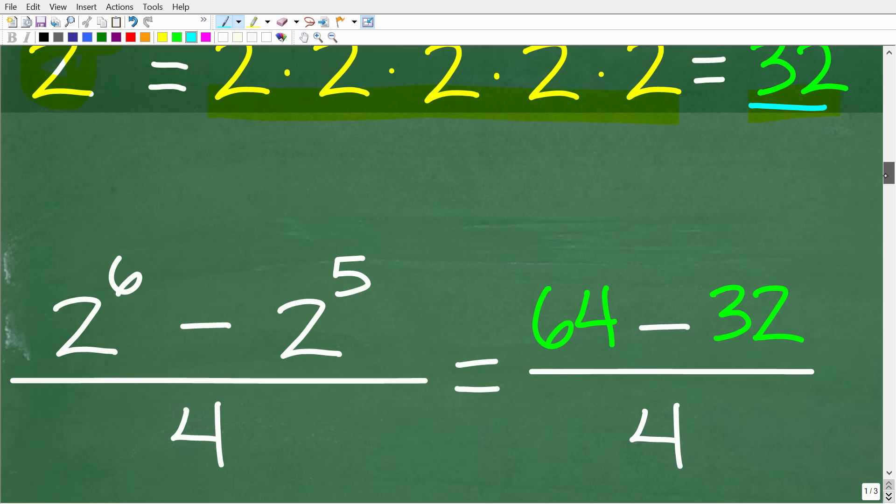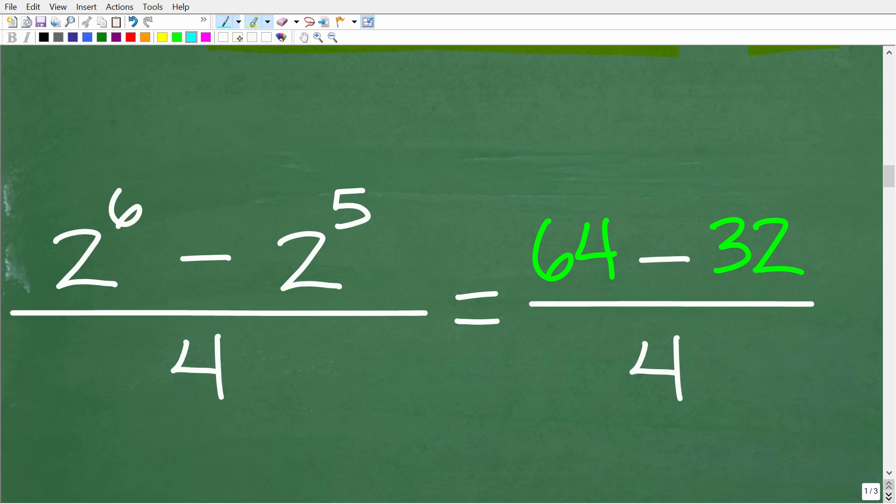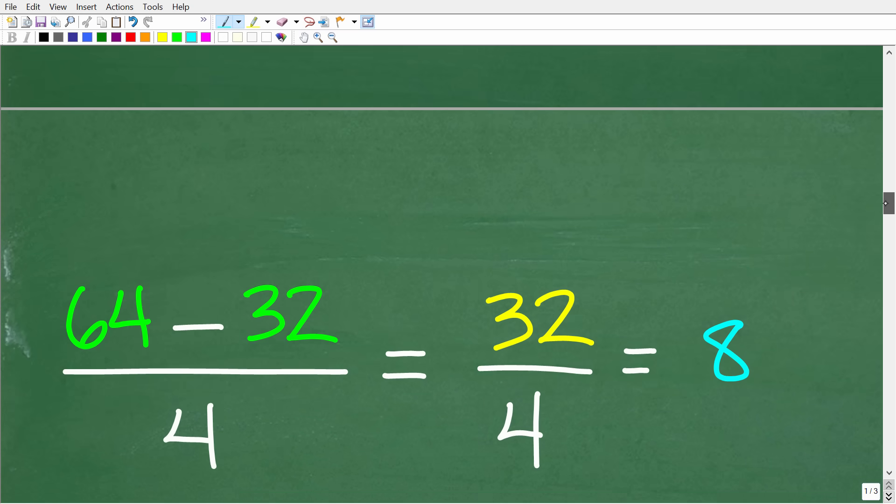So our problem really is this. So 2 to the 6th minus 2 to the 5th is equal to 64 minus 32, and this is our numerator. So this will all be over 4. So now that we know the actual values of these powers, all we have to do is subtract these numbers up in the numerator. So we have 64 minus 32, all of this over 4.